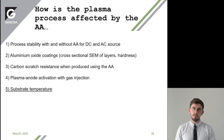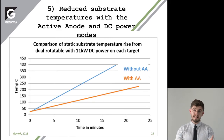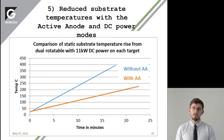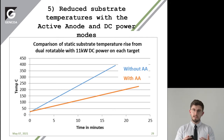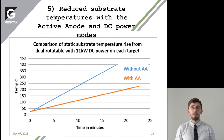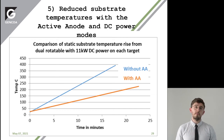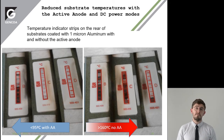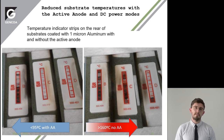Now let's look at the substrate temperature. The active anode guides electrons towards a consistent anode during your process, and a lot of the electrons contribute to substrate heating — so if you guide them towards an anode, you may see some reduction in heat. Looking at the DC power system at 11 kilowatts, without the anode the temperature of your substrate rises dramatically, whereas with the anode it's a much slower increase — less than 95 degrees versus in excess of 160 degrees without the active anode.